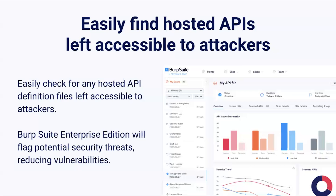API testing is becoming more important as vulnerabilities in APIs are becoming more common. We now include active and passive scan checks for detecting OpenAPI definition storage scams. The scan check uses a list of common OpenAPI definition file names and locations to search for publicly available definitions, and will then flag them in your enterprise dashboard to show those potential security threats.